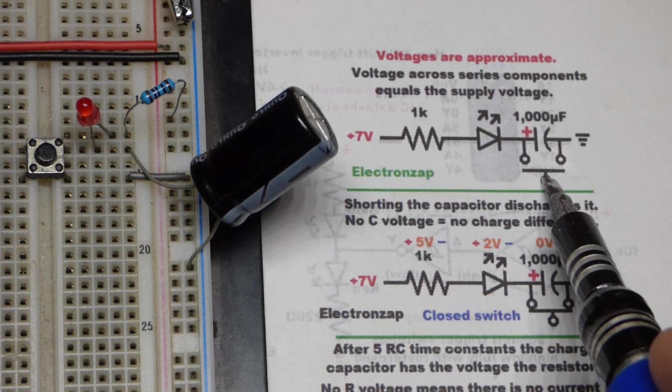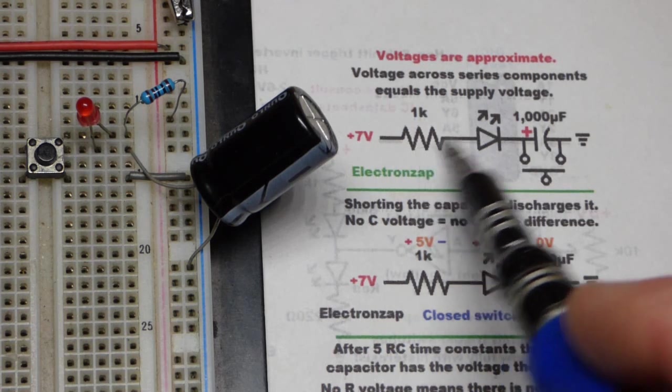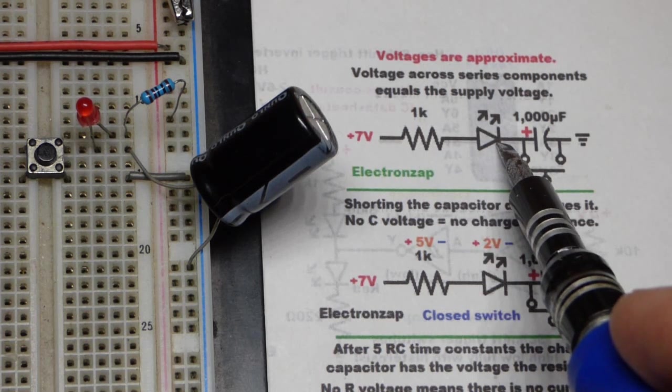When the switch is open and when the switch is closed, then we will have the components split up the voltage.